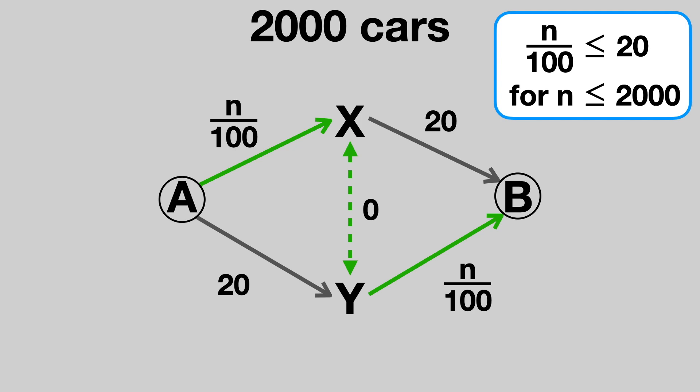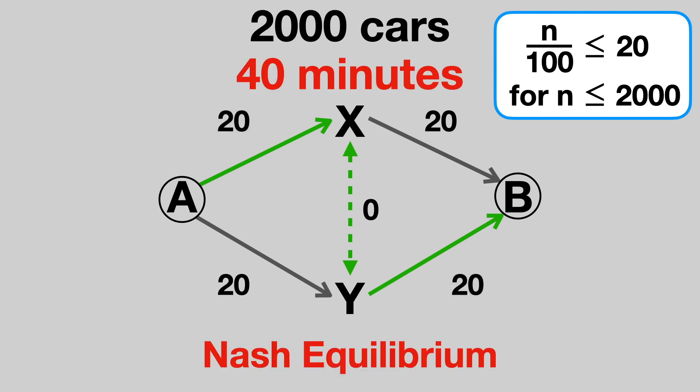If any other number of people uses these roads, they are faster than 20 minutes. Every driver prefers the N over 100 roads to the 20-minute roads, so 2,000 cars follow this route. The new Nash Equilibrium gives us a journey time of 40 minutes.